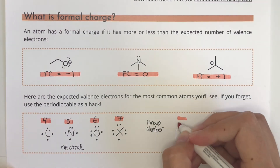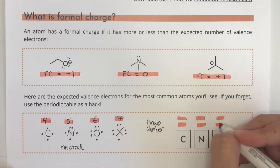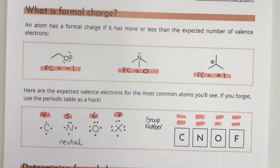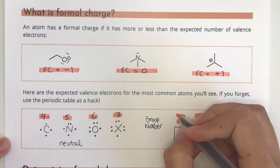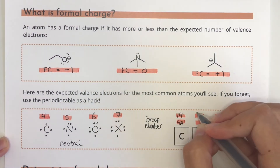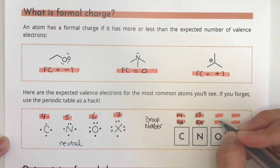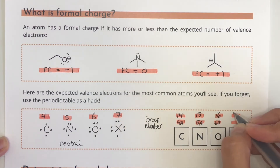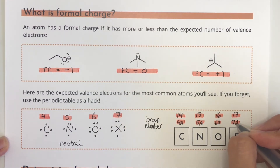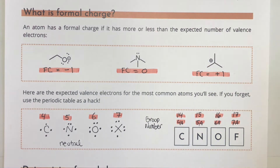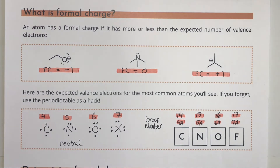Depending on how old the periodic table is that you're looking at, you'll see carbon, nitrogen, oxygen, and fluorine belonging to groups 14, 15, 16, and 17, or group 4A, 5A, 6A, and 7A. Either way, this is a quick hack to find those neutral valence electron numbers if you need them in a pinch. Once you know the number of valence electrons for a neutral atom, you can go on and determine its formal charge.